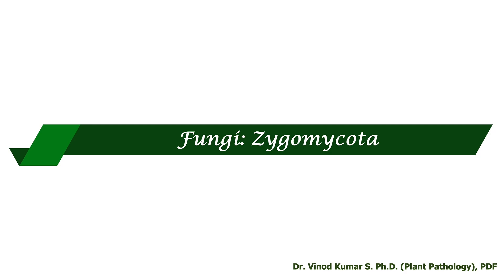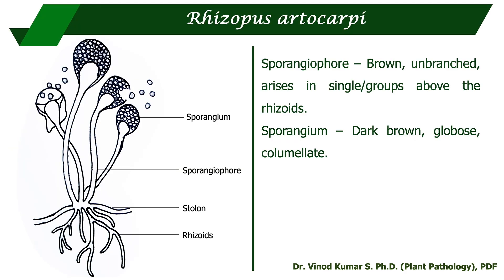Zygomycota also produces sporangia and sporangiospores, but contrastingly, while chromistans produce motile sporangiospores, in Zygomycota the sporangiospores are non-motile. Coming to Rhizopus artocarpi, which causes jackfruit rot: the sporangiophore is brown and unbranched, arising singly or in groups just above the rhizoids. The sporangia are dark brown, globose, and columellate. Inside, they produce spherical, single-celled, brown, non-motile sporangiospores — also known as aplanospores.